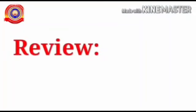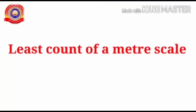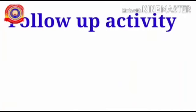Let us conclude our class. Today we have studied the smaller units of length: centimeter and millimeter. One meter equals 100 centimeters, and one centimeter equals 10 millimeters. The least count of a meter scale is the smallest length that can be accurately measured using it, which is one millimeter. There is an activity for you to draw in your notebook — the question is in your textbook. Be careful to mark centimeter and millimeter correctly.